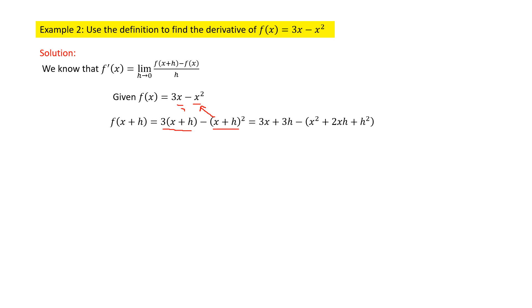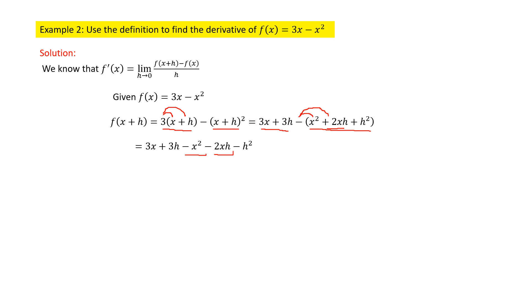My next step is to simplify these two expressions. Multiplying 3 gives 3x + 3h. Then, keeping the minus sign, for the second expression (x+h)², by using the formula (a+b)² I get x² + 2xh + h². In the next step, I distribute the minus sign to all three terms, giving −x² − 2xh − h².